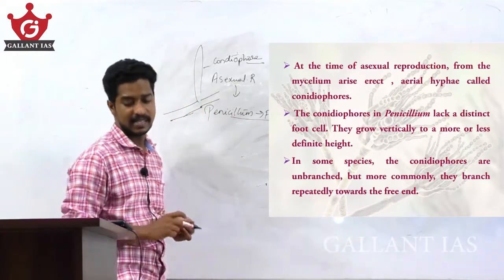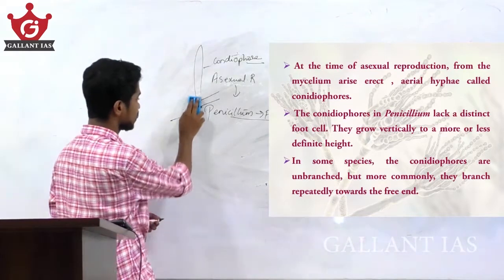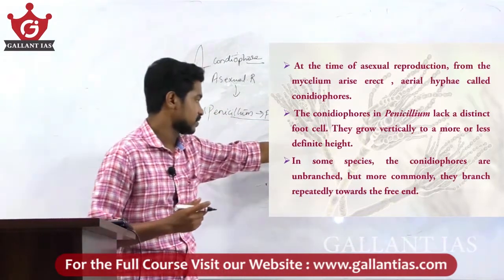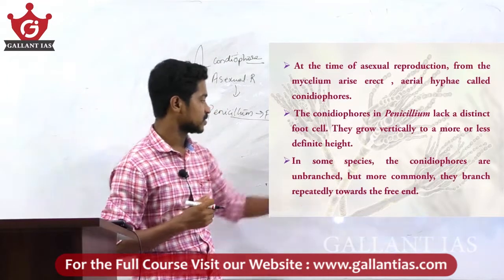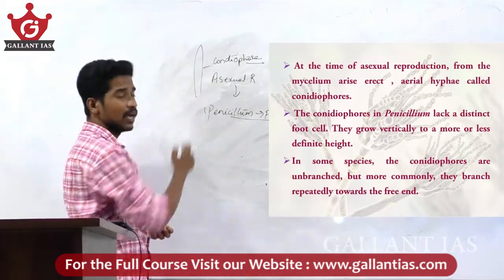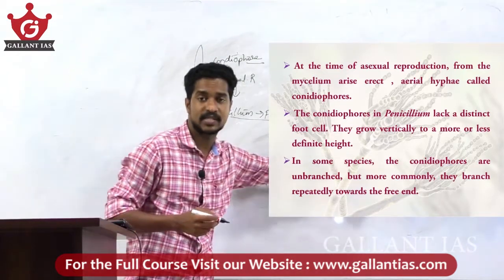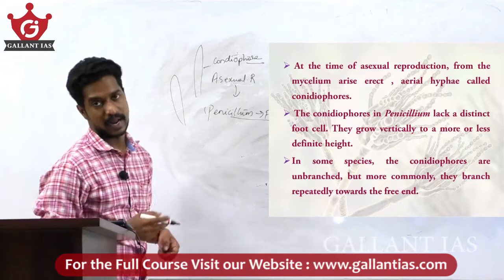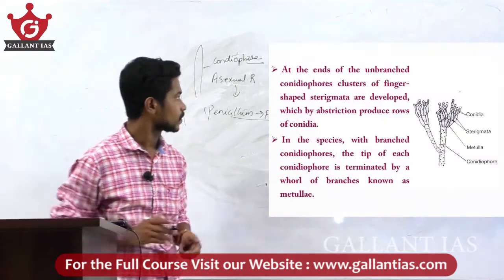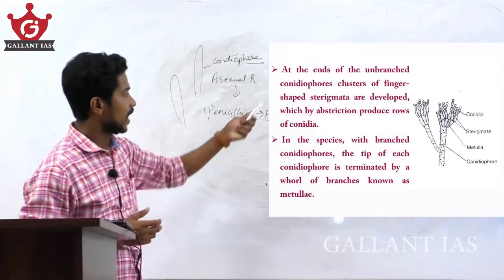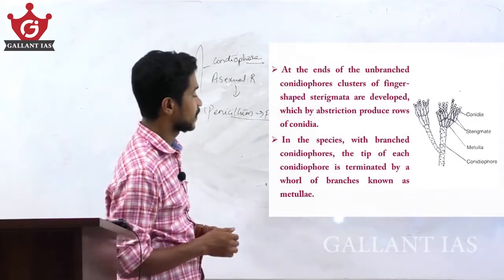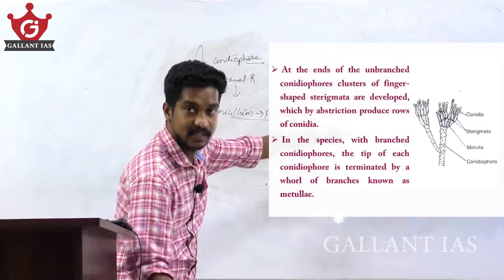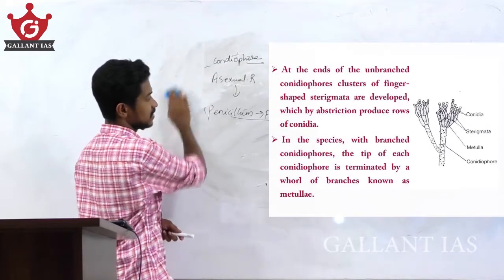The mycelia arise erect vertically to a more or less definite height. In some species the conidiophores are unbranched, but in most species they branch repeatedly towards the free end. At the end of the unbranched conidiophores, clusters of finger-shaped sterigmata are developed.